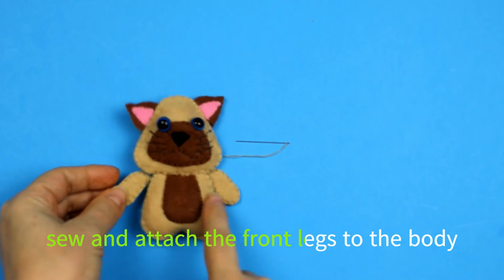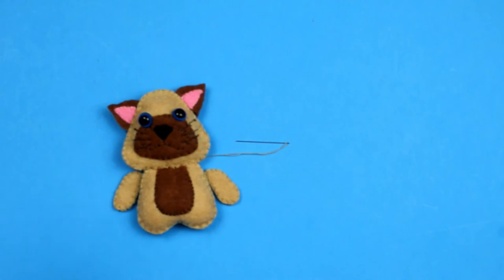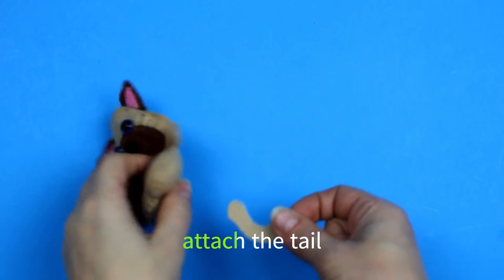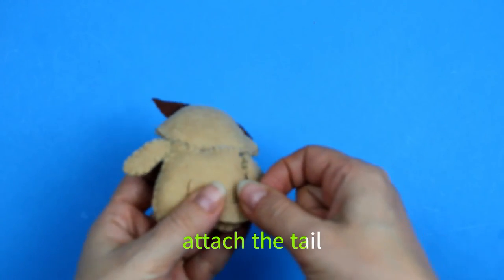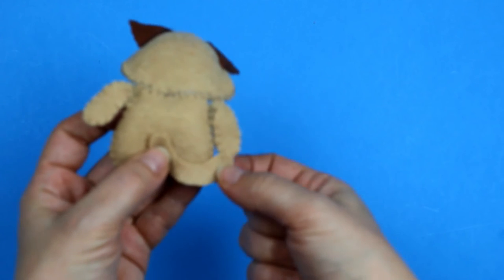Now we're gonna attach the limbs to the body. We have the legs already incorporated in the body, only the front legs. And we're gonna attach the tail also.